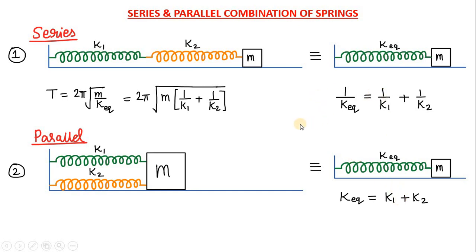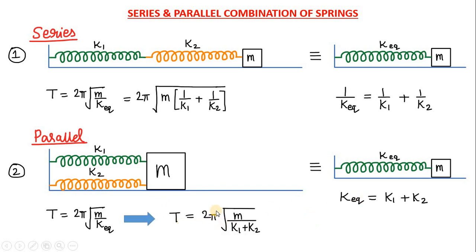So while remembering the formula, students, you must be very careful to remember that the formula for series and parallel combination of springs is exactly opposite of the formula for series and parallel combination of resistances. After finding out the equivalent spring constant, we can now write down the time period of oscillation. The time period for any spring block system is given by 2 pi root m upon k, where k will be the k equivalent, which is k1 plus k2. So the time period will be given by 2 pi root m divided by k1 plus k2.